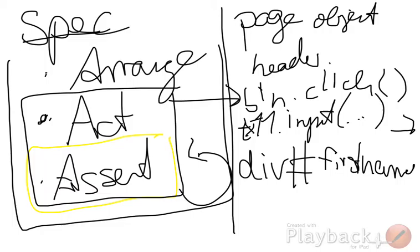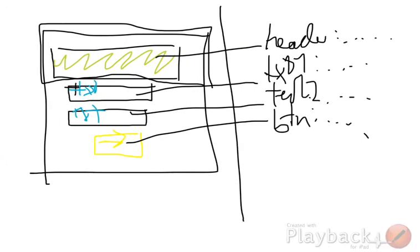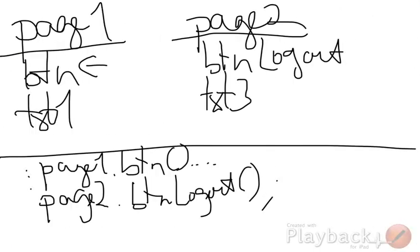Another thing worth mentioning: you also have to implement the actual page. For some elements you need to know the ID, so certain IDs have to be defined in the actual production code. The WebDriver works with classes, with IDs, and even with XPath — selecting specific elements in the DOM and going down that path in the tree.